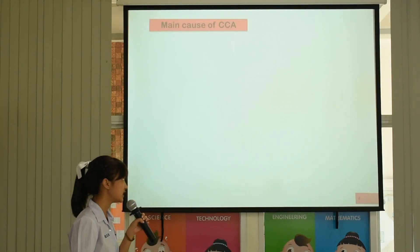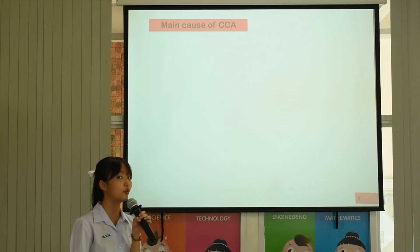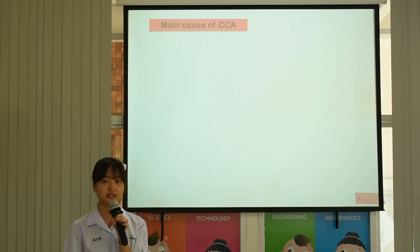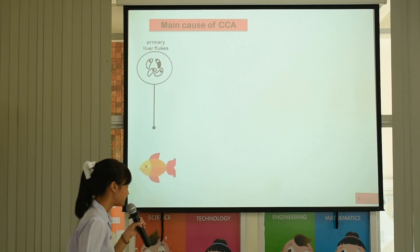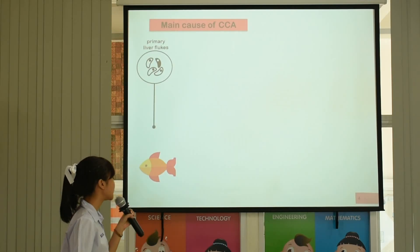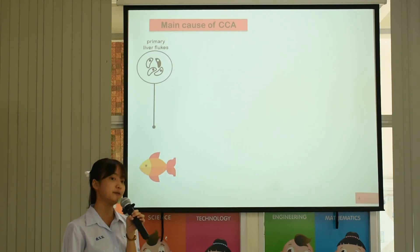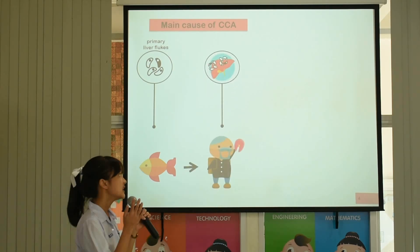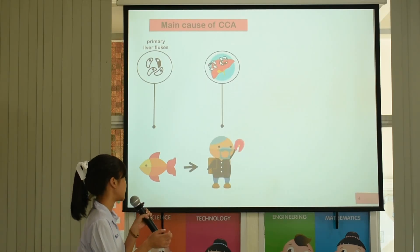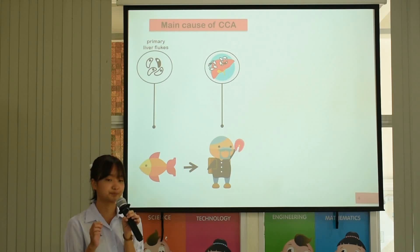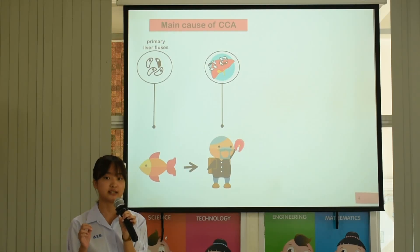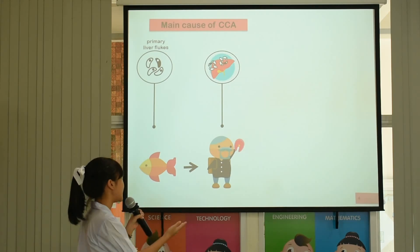Here is the proposed mechanism of OV-associated CCA development. First, OV or liver fluke usually lives in cyprinoid fish. When people have eaten cyprinoid fish, they get infected. These liver flukes can grow and survive in human bodies, especially in the bile duct.